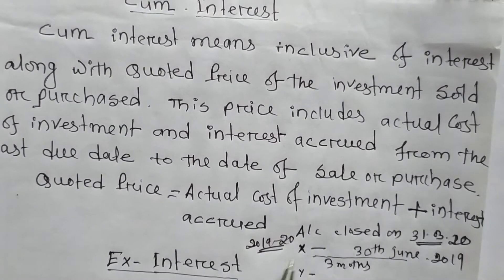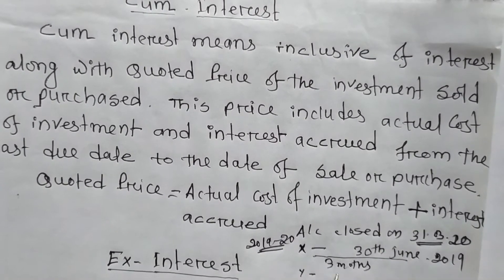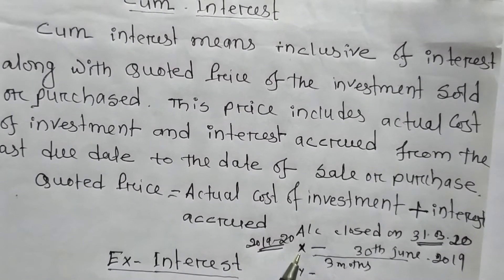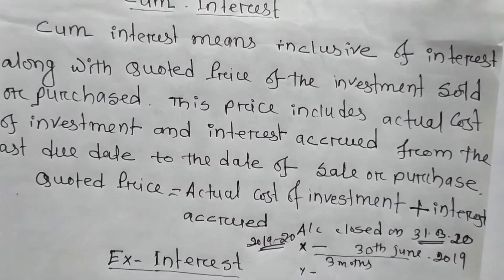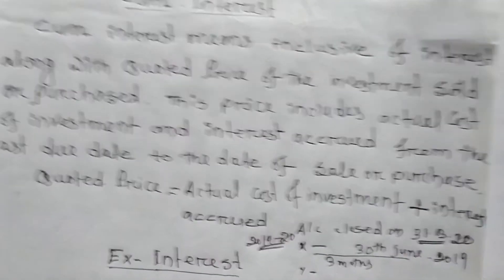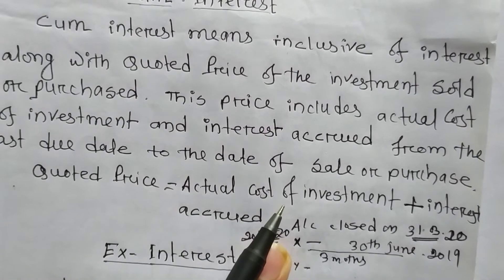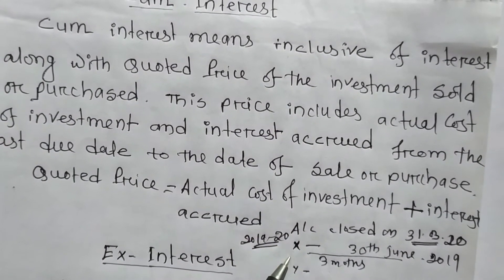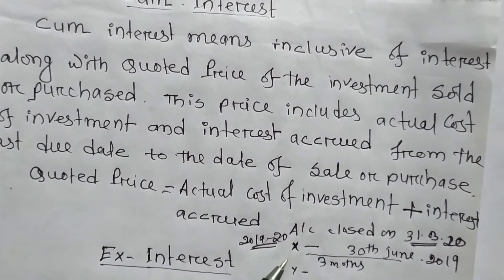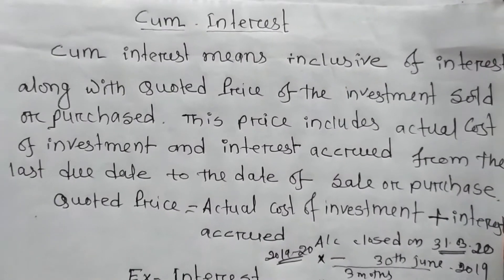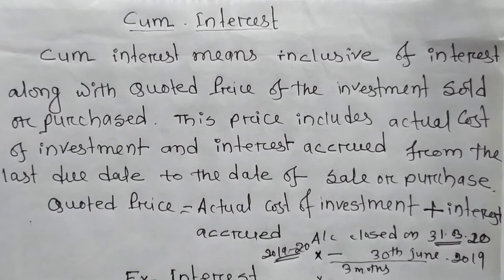The interest for the three months will be received by Mr. X, or rather the interest for those three months has to be paid by the purchaser. Suppose the purchaser is Mr. Y — Mr. Y has to pay the interest to Mr. X at the time of purchase of the securities or investment.